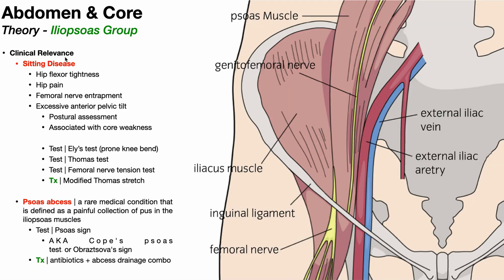What is the clinical relevance of the iliopsoas group? One consideration is what we call sitting disease — not an official disease with a billable code, but a term used in physical therapy to encompass a huge variety of symptoms for people who sit all the time and are sedentary. One of the things that happens is hip flexors become tight. When you're sitting, your hips are flexed. You're not actively using the iliopsoas, but you are putting that muscle group in a shortened position, leading to adaptive shortening, tightness, and contracture.